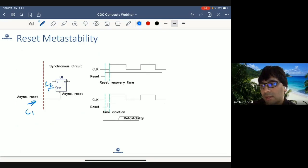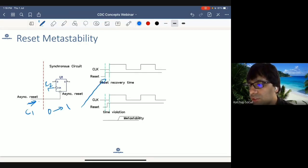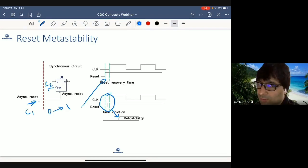Okay, because let's say if this reset gets de-asserted, meaning it changes from 0 to 1 as being shown here, it cannot change very close to clock edge. If it changes very close to clock edge, it can cause timing violation and that can lead to metastability.